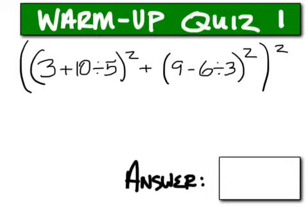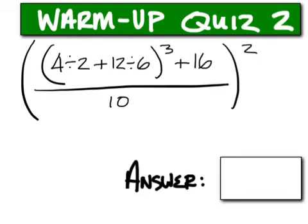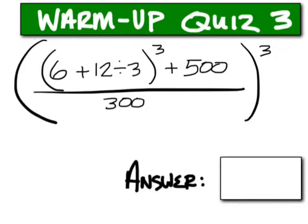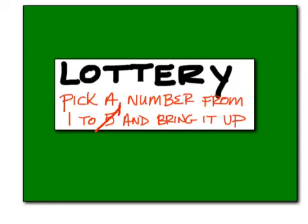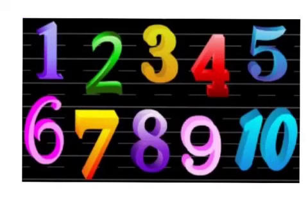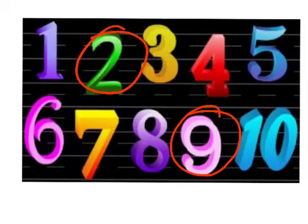The answer is 54, 76. The answer on this one should be 64. The answer is 125. Pick a number from 1 to 10. The winning numbers are 9 and 2.